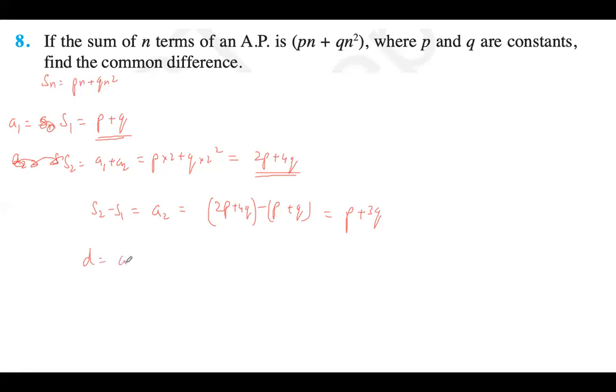Now common difference will be a₂ minus a₁. So this is P plus 3Q. Subtract a₁, which is P plus Q, from it. So it's P plus 3Q minus P minus Q. P minus P cancels, 3Q minus Q is 2Q.